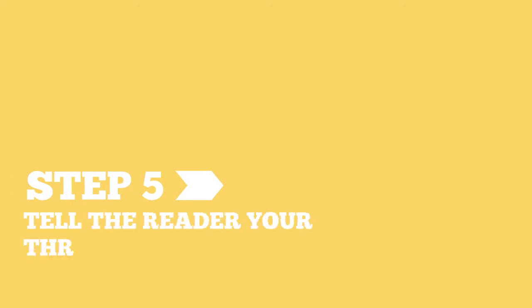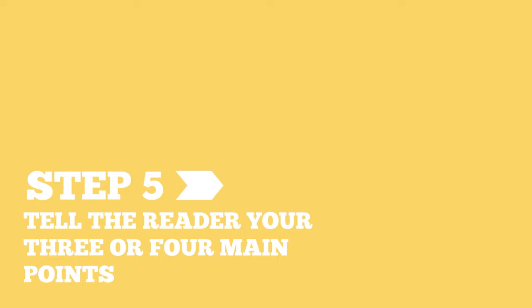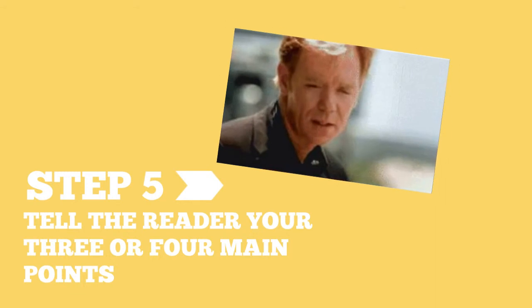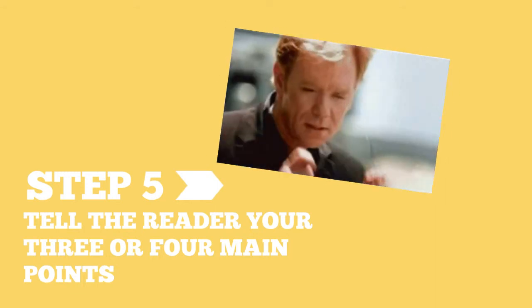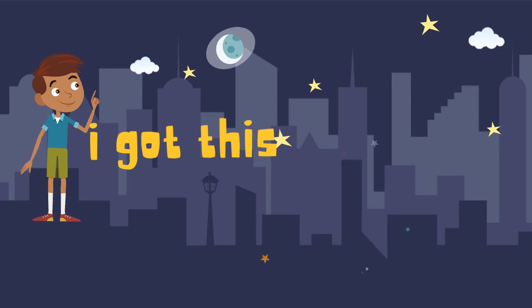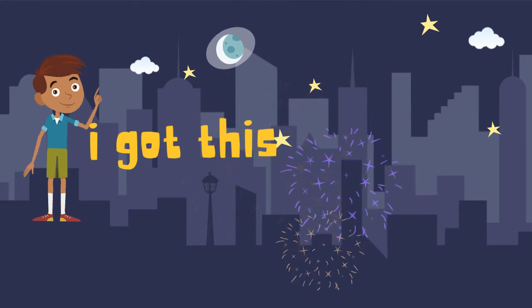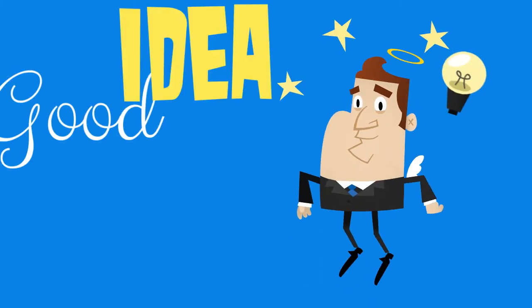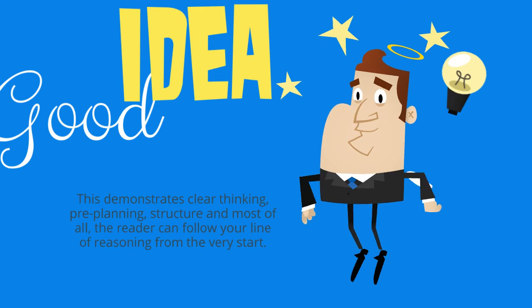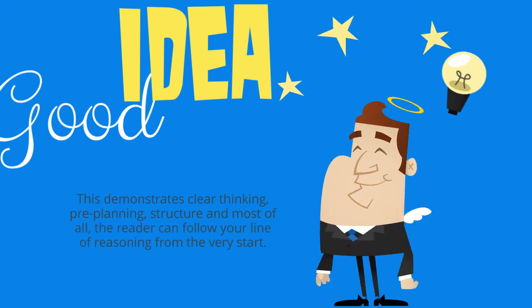And lastly, you tell the reader your three main points that you're going to use to argue the thesis. These become the main topic sentences for each of the following body paragraphs. This is really important — an academic essay is not a work of intrigue or suspense. You just tell the reader where you are going in your argument and how you're going to demonstrate it. Stating your three or four main points demonstrates clear thinking, pre-planning, structure, and — most of all — the reader can already follow your line of reasoning.